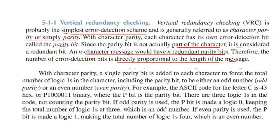With character parity, a single parity bit is added to each character to force the total number of logic 1s in the character, including the parity bit, to be either an odd or even number. For example, the ASCII code letter P is represented as P 1 0 0 0 1 1 in binary, where P is the parity bit. There are three logic 1s in the code not counting the parity bit. If odd parity is used, the P bit is made logic 0, keeping the total number of logic 1s at 3. If even parity is used, the parity bit is made 1, making the total number of logic 1s four, which is an even number.